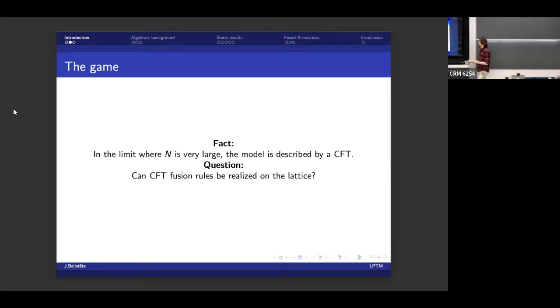And one of those things are fusion rules. Conformal field theories have fusion rules. Simply put, you have two fields in your theory. You can take a sort of tensor product of the two and break it down as a sum of other fields. These are the fusion rules in there. It's the same kind of things that you find in tensor products for a quantum group. And the big question is, can you realize them as lattice objects?